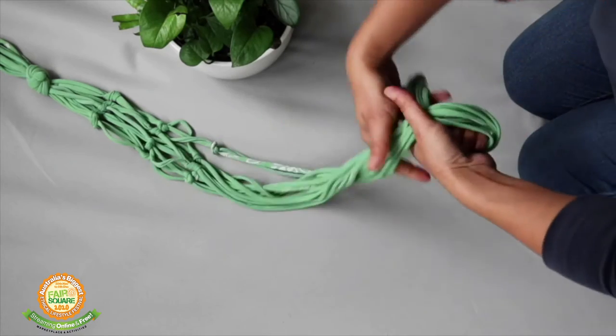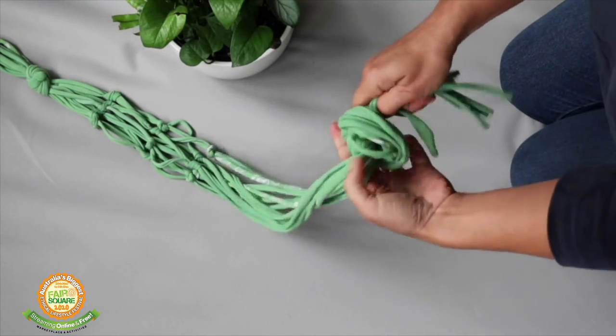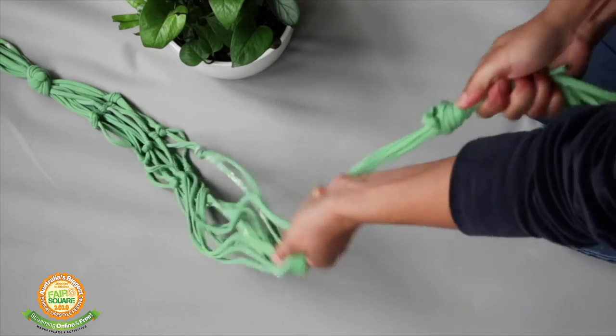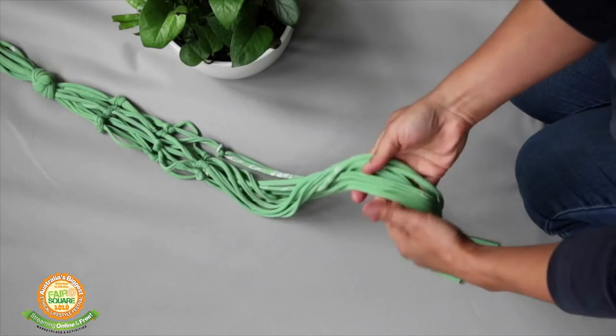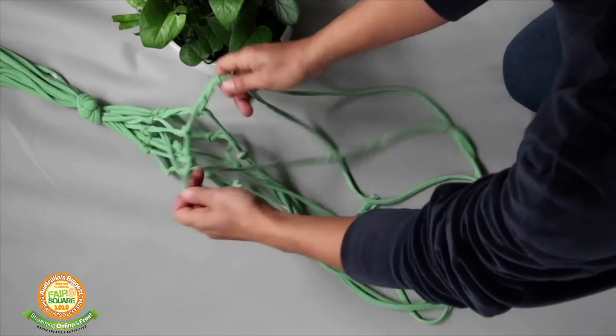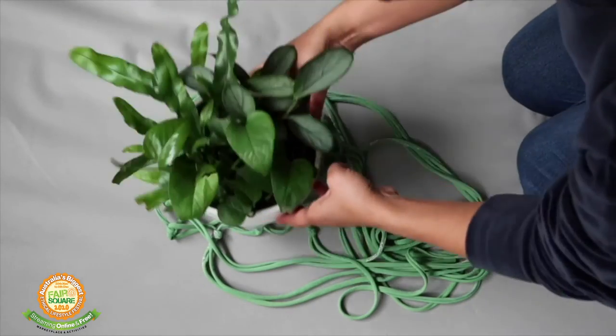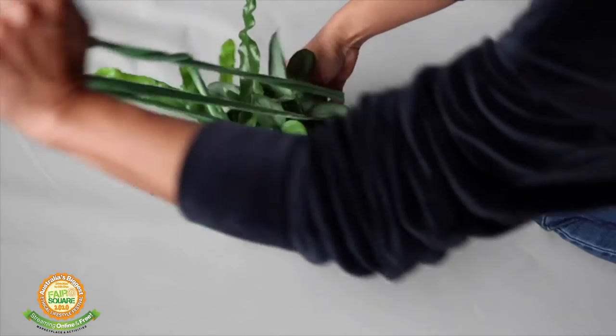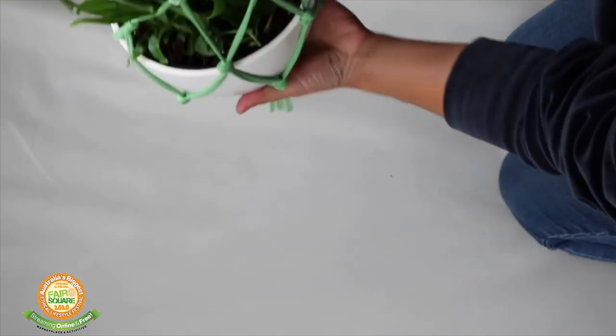Tie a knot in it. I probably, if I was doing this, later on I'll probably trim off the excess strands from that just to tidy it up. So that could provide the section that you can hang your basket up in.